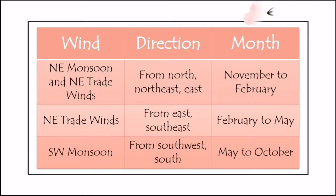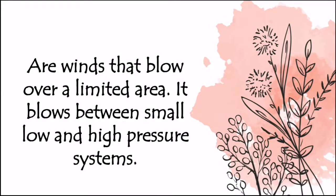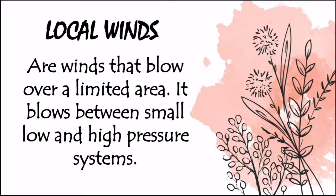Considering the extensive coastline of our country, the north-south orientation of various mountain ranges, as well as the presence of lakes and other bodies of water, the directions of the prevailing winds are somewhat changed in different localities. These are called local winds. Local winds blow over a limited area only, between small low- and high-pressure systems.